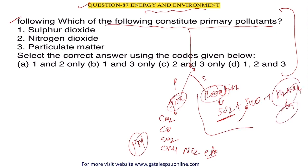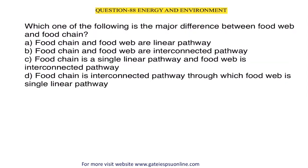For this question, they are asking about primary pollutants. Sulfur dioxide, nitrogen dioxide, and particulate matter are all primary pollutants. All three options are correct, so option D is the correct answer for this question.